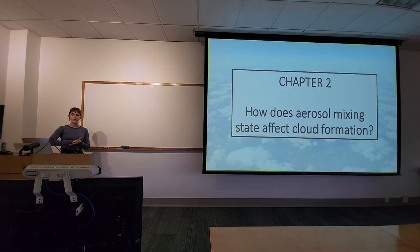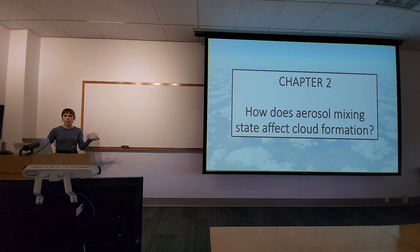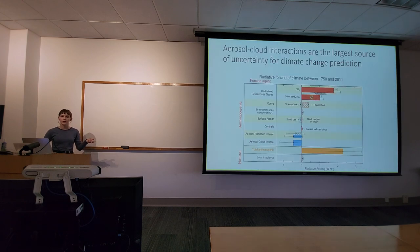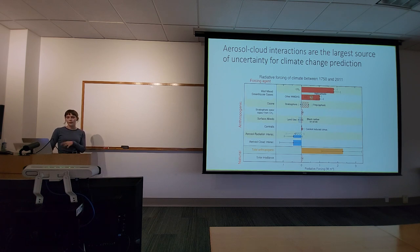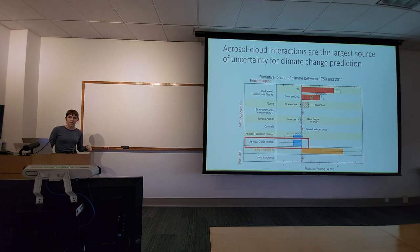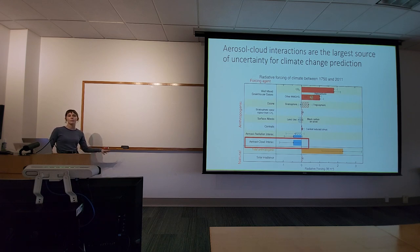The chapter one takeaways are: halite is not the only chlorine-containing mineral of importance for this mechanism; other chemical components like organics can affect ClNO2 formation; and ClNO2 formation occurs on the surface of a particle, so single particle methods are needed to predict this formation. Moving to chapter two — how aerosol mixing state affects cloud formation — aerosol–cloud interactions are the largest source of uncertainty for climate change prediction.